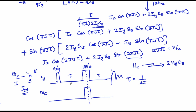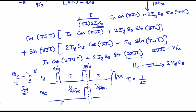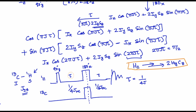Meaning that if you set τ to 1/(4JHC), you are able to understand that the Hz magnetization you started with will get purely converted to HyCz. This is a very important aspect, and once again we will be exploiting this spin echo module — τ-180-τ with the 180 being simultaneous and τ delays equal before and after — to transfer polarization from proton to carbon.